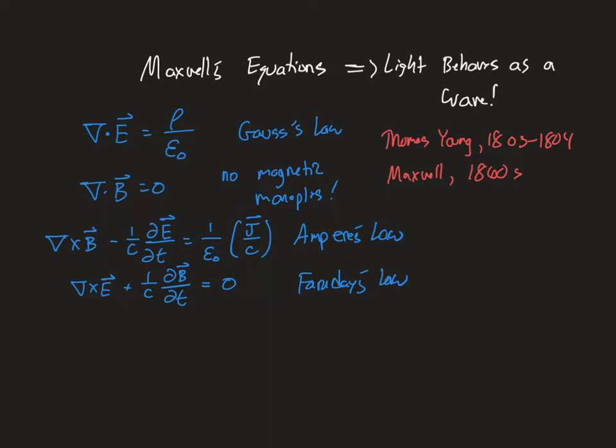I've written these equations assuming we have some kind of sources — some kind of current and some kind of charge density. The first thing I'm going to do to prove that this set of equations predicts the existence of electromagnetic waves is say that we have a source-free region. The reason for doing that is partly to make things simpler. If you can create electromagnetic waves in a source-free region, why not do that?